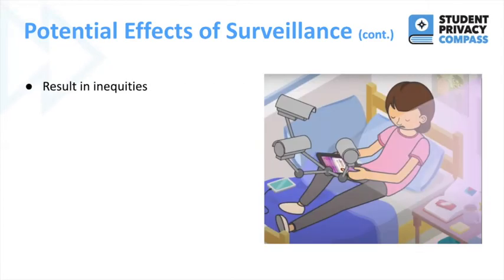The last potential effect of surveillance we want to discuss is that it can result in inequities. For example, students who do not own a personal device must probably rely on a school device, and school devices are typically monitored. They can send alerts when students visit certain sites or look up certain search terms to help with safety. But this means that kids who don't own their own devices might get in trouble for things that kids who do own their devices will not get in trouble for.